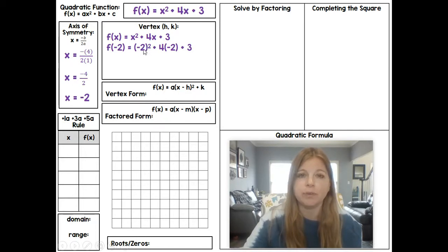So (-2)² is 4. 4 × -2 is -8. So this then becomes f(-2) = 4 - 8 + 3. 4 - 8 is -4. -4 + 3 is -1. So it ends up being that my vertex is (-2, -1). It's this x value and this y value that we created. And again, that's my h, k.